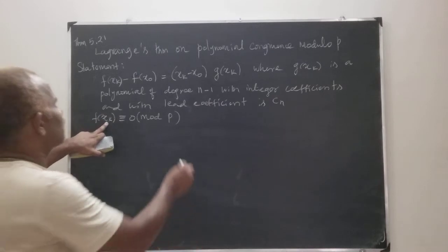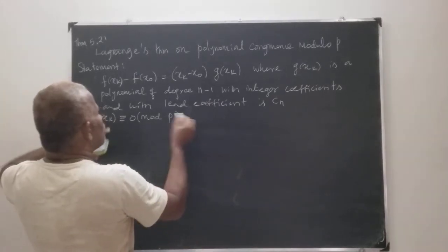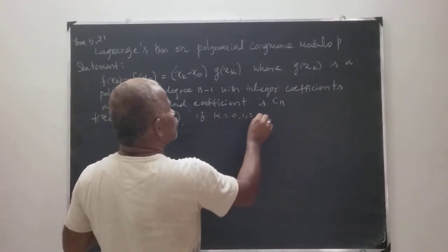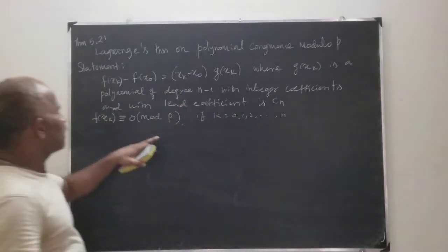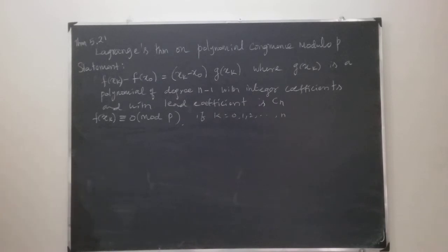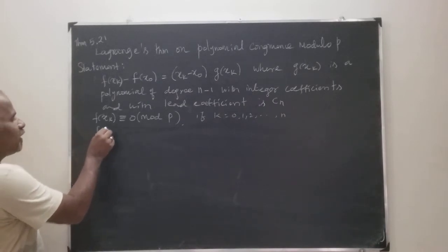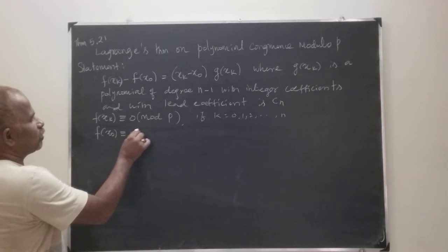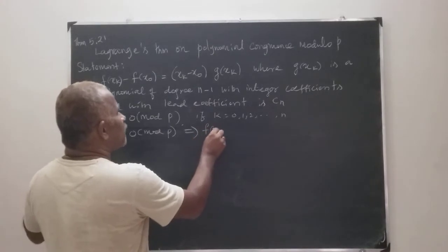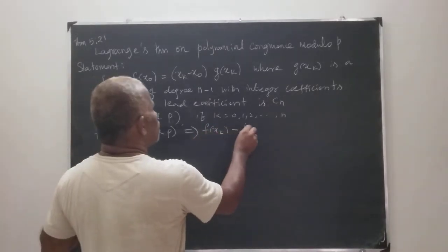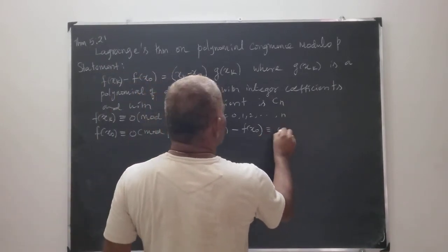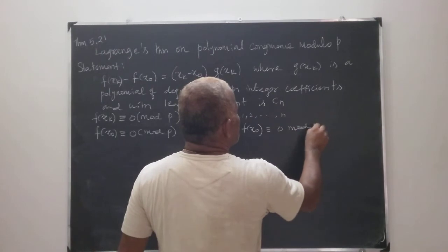Because x0, x1, x2, ... up to xn are all solutions. So similarly F of x0 is also congruent to 0 mod P. This implies F of xk minus F of x0 is also congruent to 0 mod P.